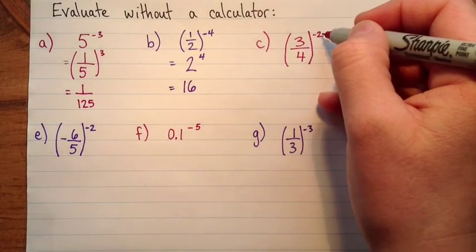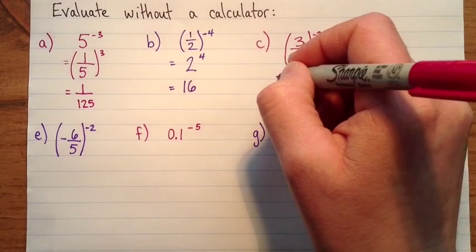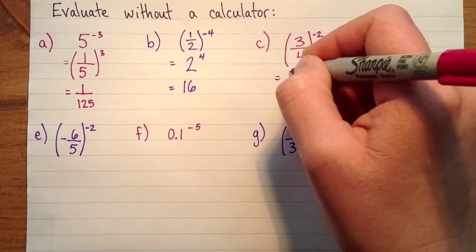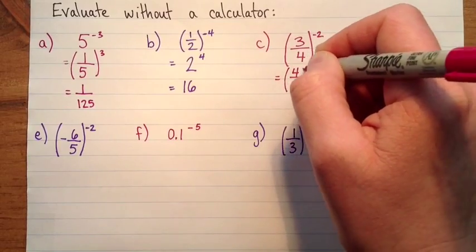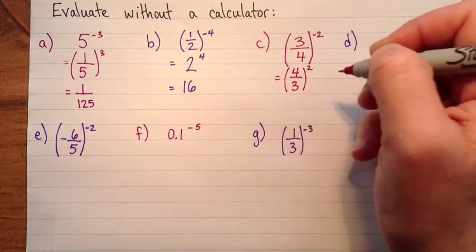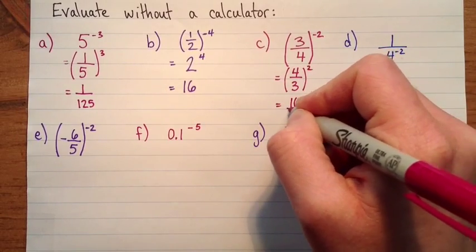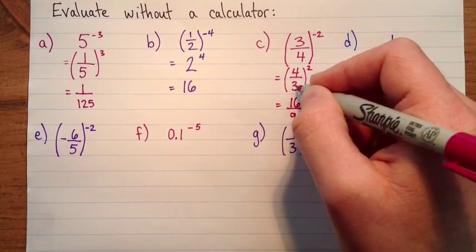Alright, here we've got 3 fourths to the exponent negative 2. So we take the reciprocal of the base, 4 thirds to the exponent 2, which is equal to 16 over 9, just square the top and the bottom.